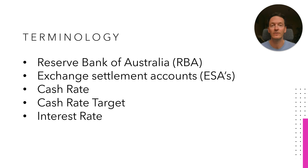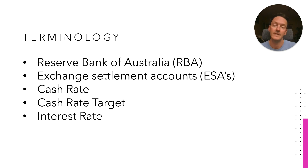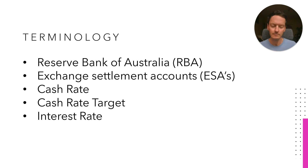We then have this idea of an interest rate, and in this context usually a commercial interest rate — the rate at which regular mums and dads and businesses will borrow or lend money in their particular situations. It can be a little confusing because we're going to be talking about the interest rate corridor, but interest rates traditionally in Year 12 Economics are just the cost of borrowing money and the reward for saving or lending money.